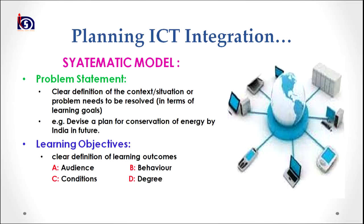The question now is: how do we plan for ICT integration? We have different models such as iCare and Assure, but here I will discuss the systematic model of ICT integration. The systematic model has six stages. The first stage is the problem statement stage, where we clearly define the context or problem that needs to be resolved in terms of its learning goals — for example, devising a plan for conservation of energy, clearly defining what goals we are trying to achieve.